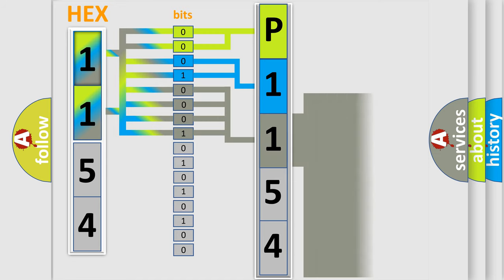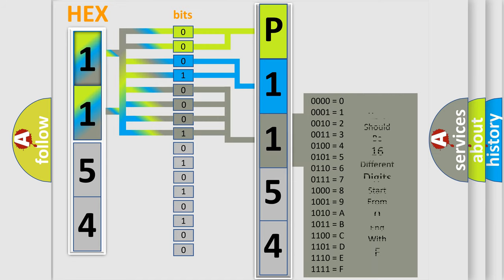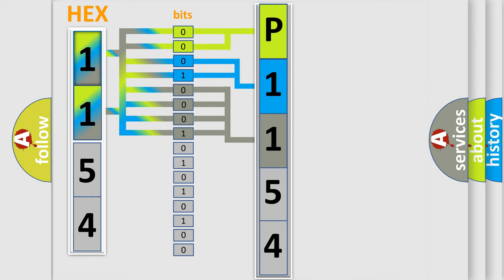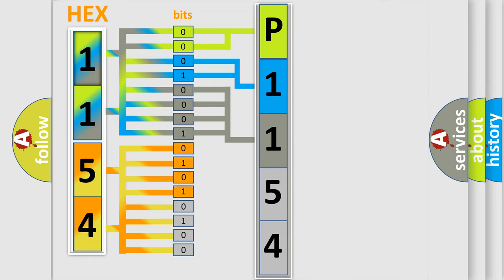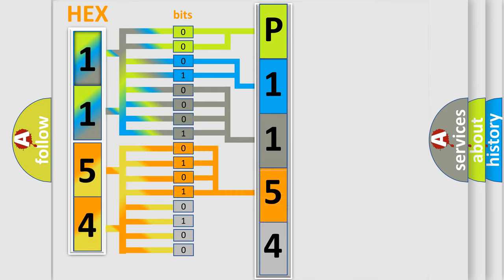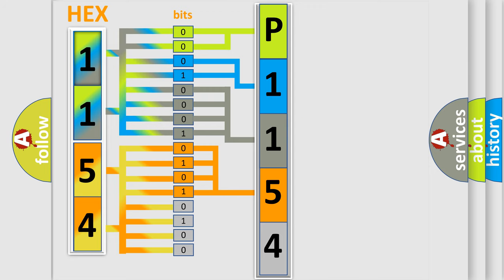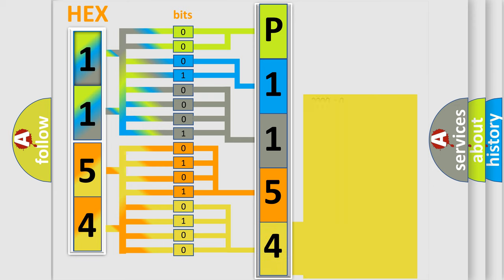The second byte is composed of a combination of eight bits. The first four bits determine the fourth character of the code, and the combination of the last four bits defines the fifth character. A single byte conceals 256 possible combinations.